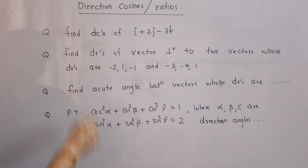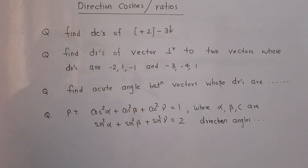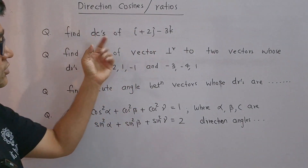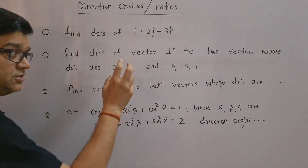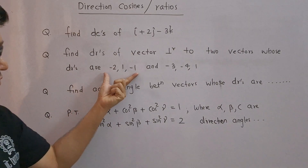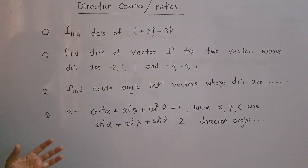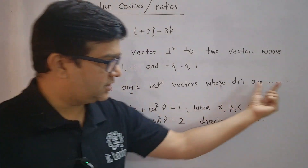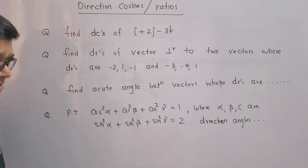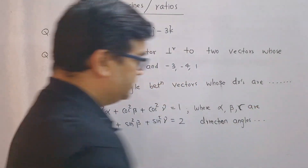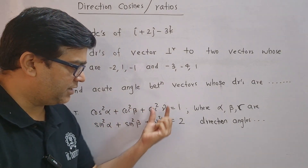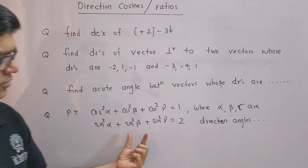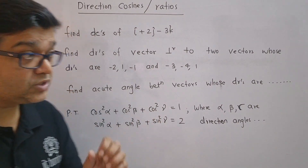The third most important topic in vectors for HSC board examination is questions based on direction cosines and direction ratios. For example, they might ask: find direction cosines of the given vector, find direction ratios of a vector perpendicular to two given vectors, or find the acute angle between vectors whose direction ratios are given. You might also be asked to prove cos²α + cos²β + cos²γ = 1 and sin²α + sin²β + sin²γ = 2.